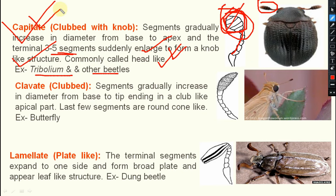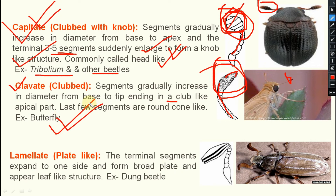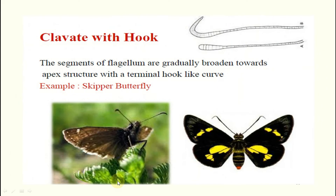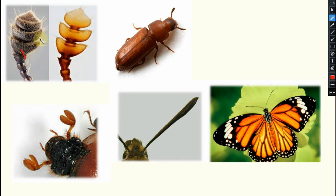Next one is clavate — here also segments are gradually increasing in diameter from base to tip, ending in a club-like structure. The last few segments are round and cone-like. This is present in case of butterflies. Next one is lamellate — that is plate-like. The terminal segments expand to one side and form a broad plate-like or leaf-like structure. Present in case of dung beetle. Here you can see the zoom version: this is capitate, this is clavate, and this is lamellate.